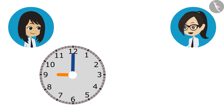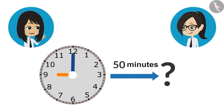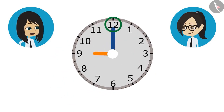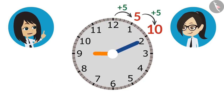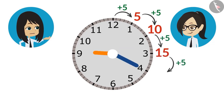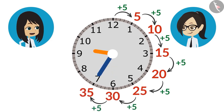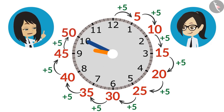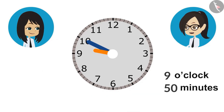I have drawn the start time of the class in this clock, and we have to find out what will be the time after 50 minutes. So for that we will look at the minute hand. Right now the minute hand is at 12. When we bring it to 1, it will be 5 minutes. When we bring it to 2, it will be 10 minutes. 15 at 3, 20 at 4, 25 at 5, 30 at 6, 35 at 7, 40 at 8, 45 at 9, and it will be 50 minutes at 10. This means our class will end at 50 minutes past 9 o'clock.